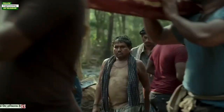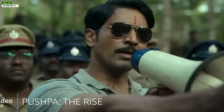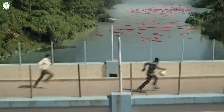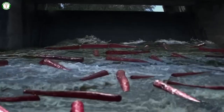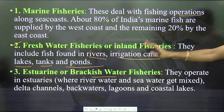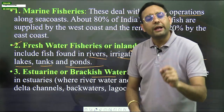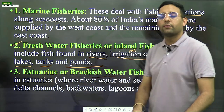A reservoir is created when we create an obstruction in the path of water — this is called a dam. In the movie Pushpa, a dam was shown where logs were thrown into the water. A dam can be considered a reservoir. So fishes found in rivers, irrigation canals, reservoirs, lakes, tanks, or ponds are known as inland or freshwater fishes.